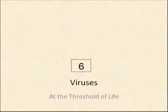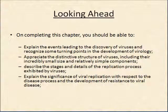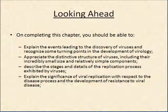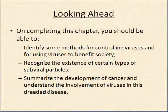This presentation is over chapter 6, talking about viruses. As we go through this chapter, at the end you should be able to explain the events leading to the discovery of viruses, appreciate the structure of viruses, describe the stages and details of the replication process, and explain the significance of viral replication in respect to its effect on disease states. You should be able to identify some methods of controlling viruses, also for using viruses to the benefit of society. You should recognize the existence of certain types of sub-viral particles like viroids and prions, and summarize the development of cancer as it relates to viruses.